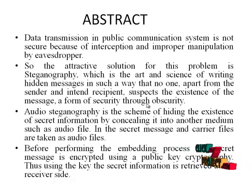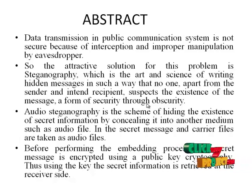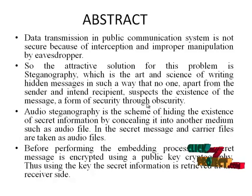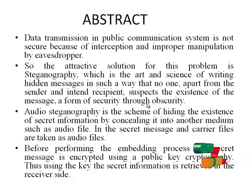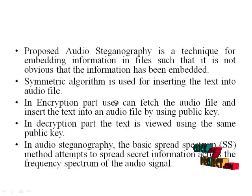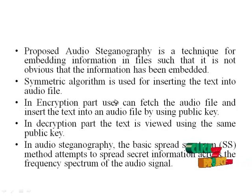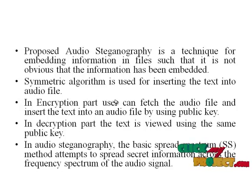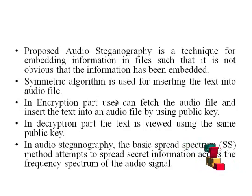The secret message and carrier files are taken as inputs. Before performing the embedding process, the secret message is encrypted using public key cryptography. The secret information is then retrieved at the receiver side. Proposed audio steganography is a technique for embedding information in files such that it is not obvious that the information has been embedded. A symmetric algorithm is used for inserting the text into an audio file.